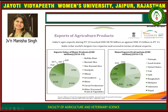Regarding exports of agricultural products, India's agro exports during FY15 touched 38.70 billion US dollars, as against 15 billion US dollars in FY11. India is the world's largest rice exporter and second in terms of wheat exports. Major export products include buffalo meat, basmati rice, non-basmati rice, sorghum and wheat. Major export destinations in 2014–15 include Vietnam, Saudi Arabia, United States, Iran, UAE, Bangladesh, Malaysia, Indonesia and Nepal.